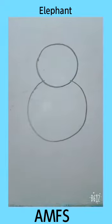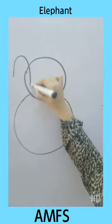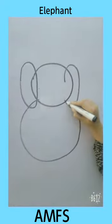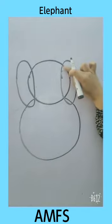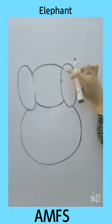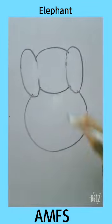Draw two ears in oval shape. Erase the extra lines again.